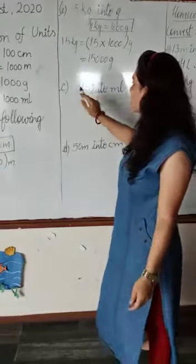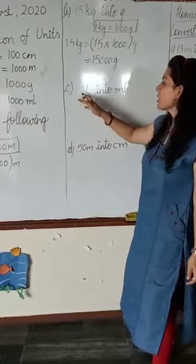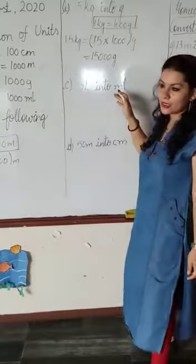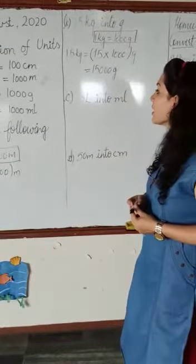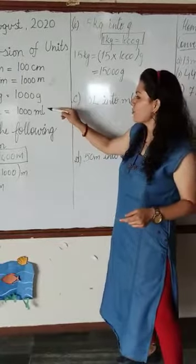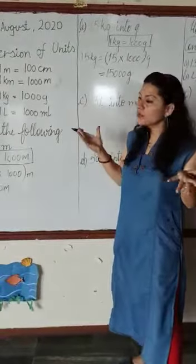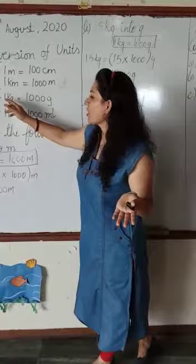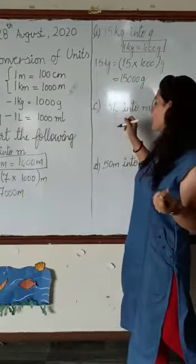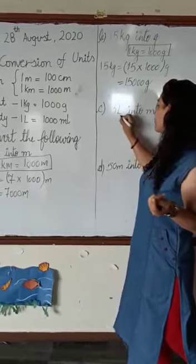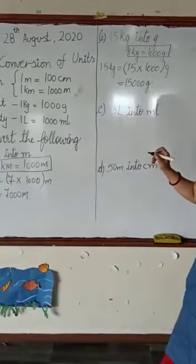My children, the next question is we have to convert 3 liters to milliliters. One important thing I told you in our live class: solids are measured in grams and liquids are measured in liters. So we have to convert 3 liters into milliliters.